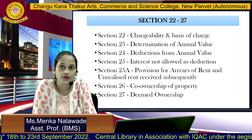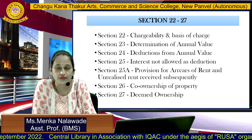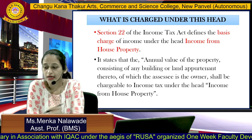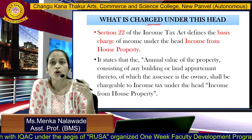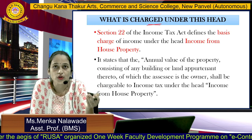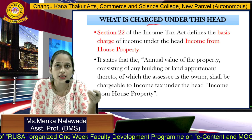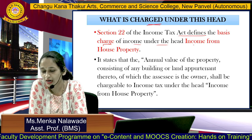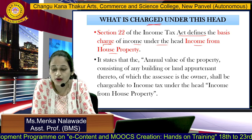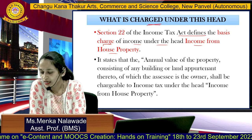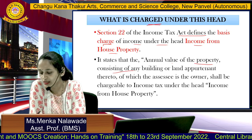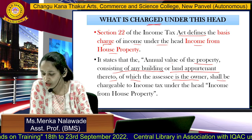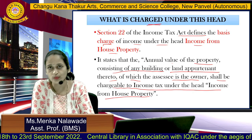We will be covering sections 22 to 27 in this chapter. Section 22 is the charging section — it gives us the authority to charge income from house property. Section 22 states that the annual value of property consisting of any building or land appurtenant thereto, of which the assessee is the owner, shall be chargeable to income tax under the head income from house property.